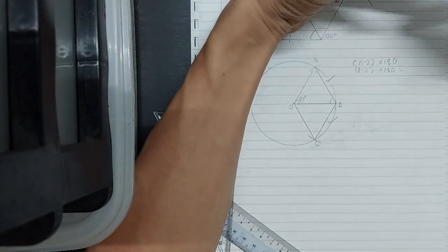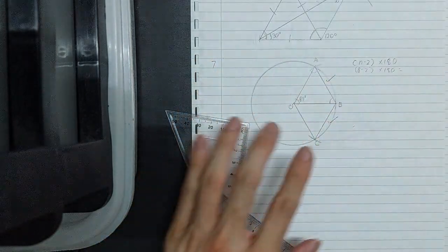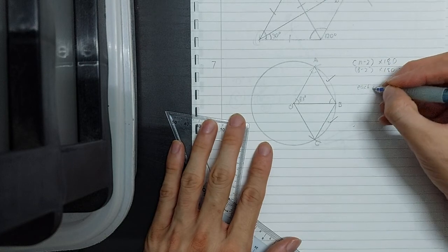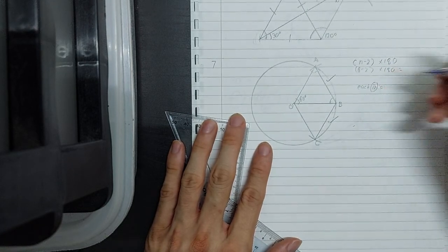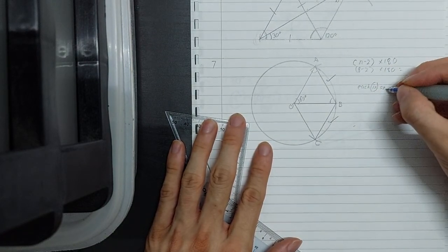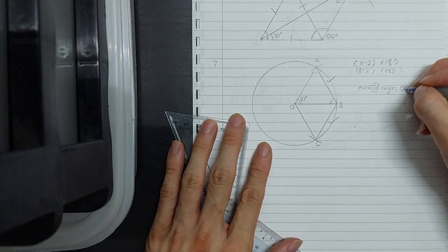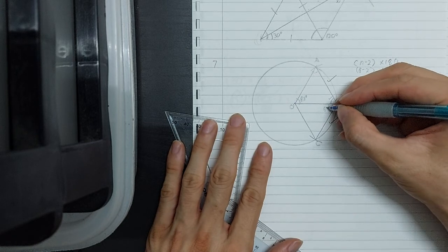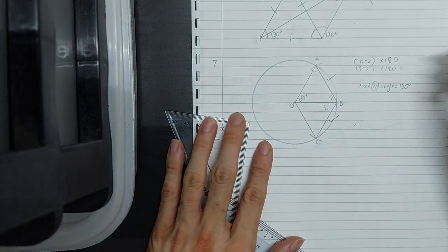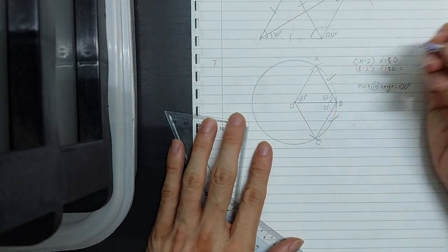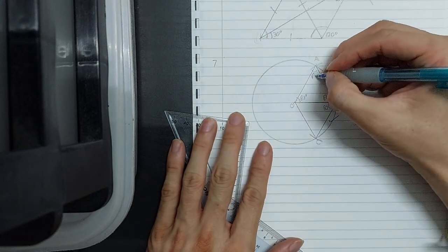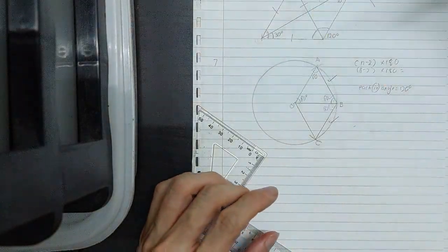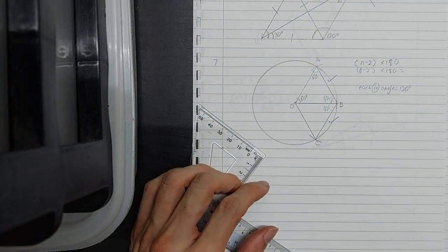4 times 180 and divide by 6. So each angle of the hexagon, each interior angle, is 120. So you know this part is 60 and this part is 60. So both of them, they add up together to 120. And you know this part is 60 already. So basically, in other words, they're asking you to construct 60 degrees all around the circle. So how are you going to do that? It's very simple.